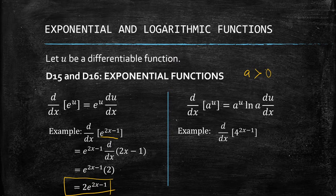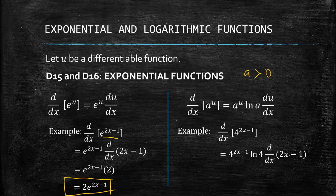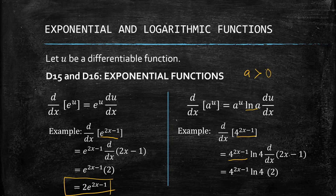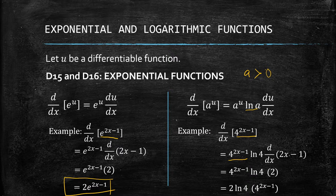For example, the derivative of 4 raised to the power of 2x minus 1: we copy the given, then unlike e^u, we include ln(a). Our base a is 4, so we write ln(4), then get the derivative of the exponent 2x−1, which is 2. Note that ln(4) is a constant, so we have 2 ln(4) times 4 to the power of 2x minus 1.